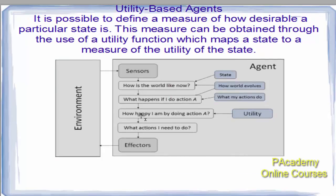Utility-based agents go beyond goal-based agents, which only distinguish between goal states and non-goal states. It is possible to define a measure of how desirable a particular state is through the use of a utility function, which maps a state to a measure of utility. A measure is placed on how beneficial performing action A is — the utility measures how desirable an outcome can be, and based on that utility measure, the outcome is decided.